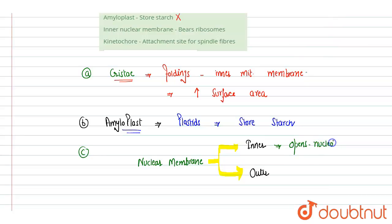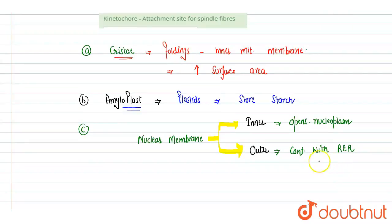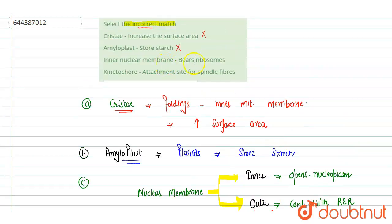The outer nuclear membrane, on one side, is attached to the inner membrane, and on the other side it opens into the cytoplasm. It is continuous with the rough endoplasmic reticulum, which is named 'rough' because it contains ribosomes. Therefore, the outer membrane contains ribosomes, while the inner membrane does not. So 'inner nuclear membrane bears ribosome' is a mismatch — this is the incorrect match.